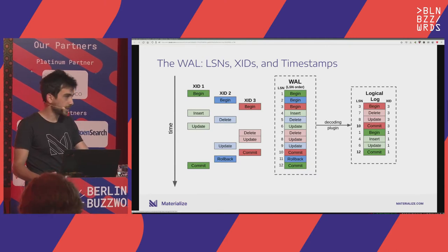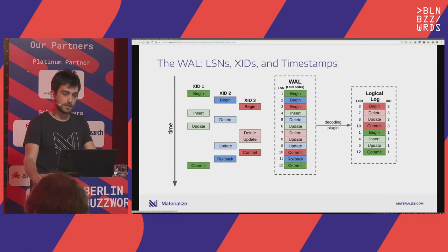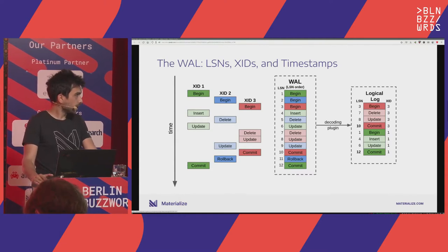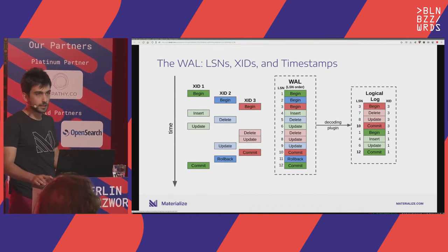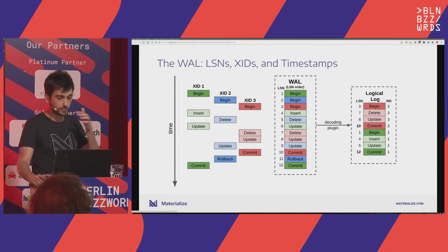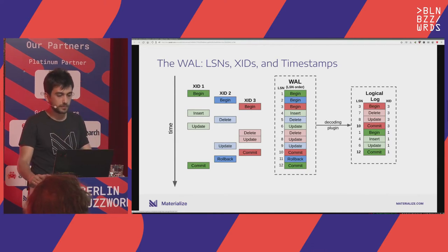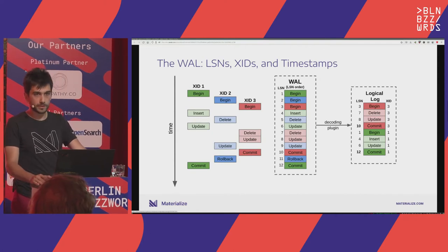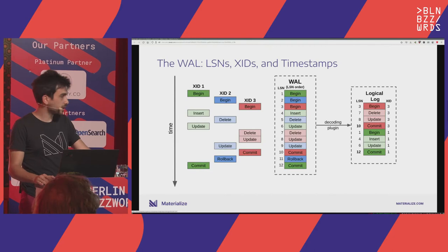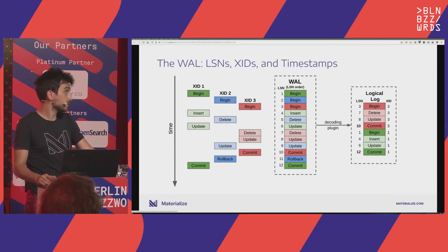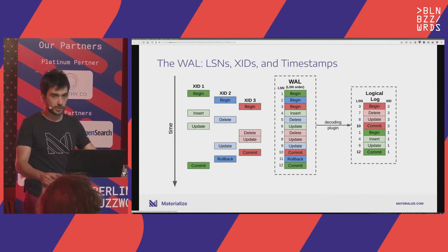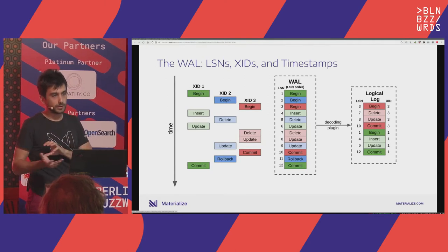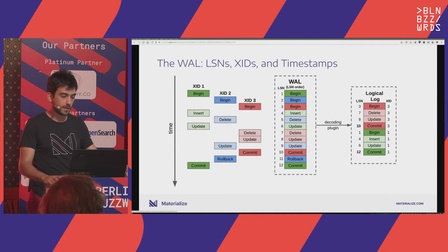To explain how we do this, we need to think about the write-ahead log that Postgres maintains internally. On the left is an example of three interleaved transactions where time flows top to bottom. The transactions start in order — green, blue, red — but end in reverse order. The first to commit is red, blue rolls back, and green commits. So you have an inverse order of commit and one that rolls back.